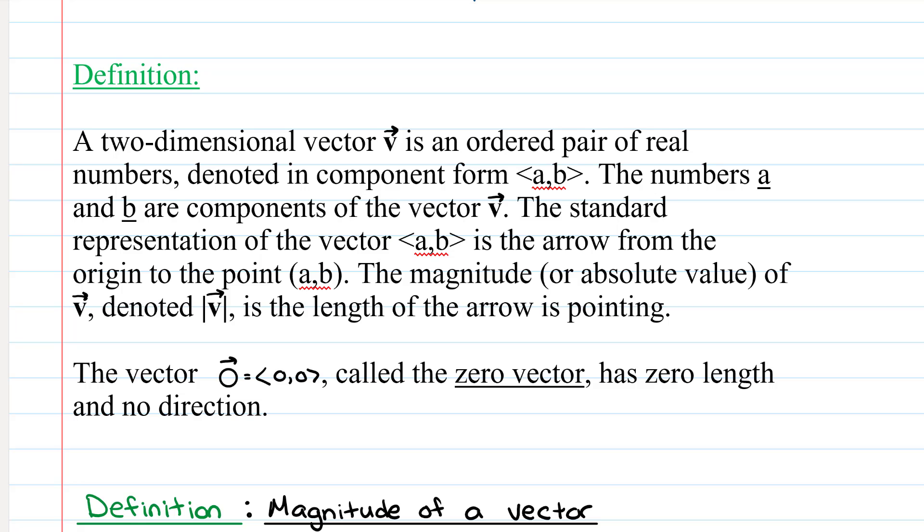The numbers a and b are components of the vector v. The standard representation of the vector v is the arrow from the origin to the point a comma b. The magnitude or absolute value of v denoted as the absolute value of v is the length of the arrow. The vector zero is called the zero vector and has length zero and no direction.